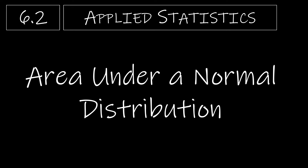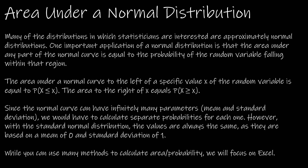Let's take a look at section 6.2, which deals with the area under a normal distribution. In statistics, we quite often have distributions that are normal or approximately normal, which means we can use the characteristics of a normal distribution to help us find the probability. The area under any part of the normal curve is equal to the probability of the random variable falling within that region.